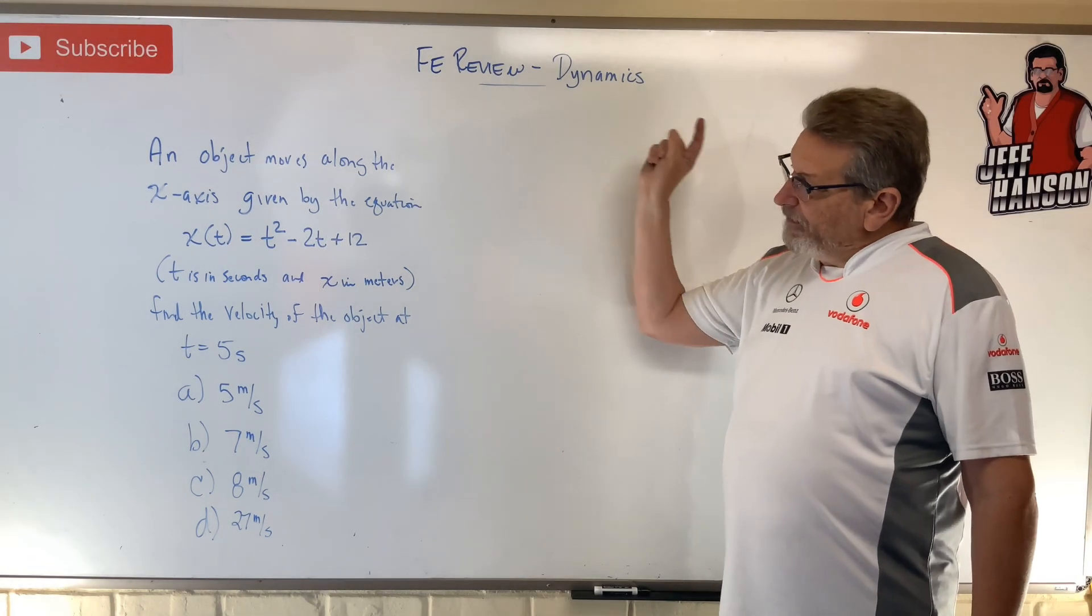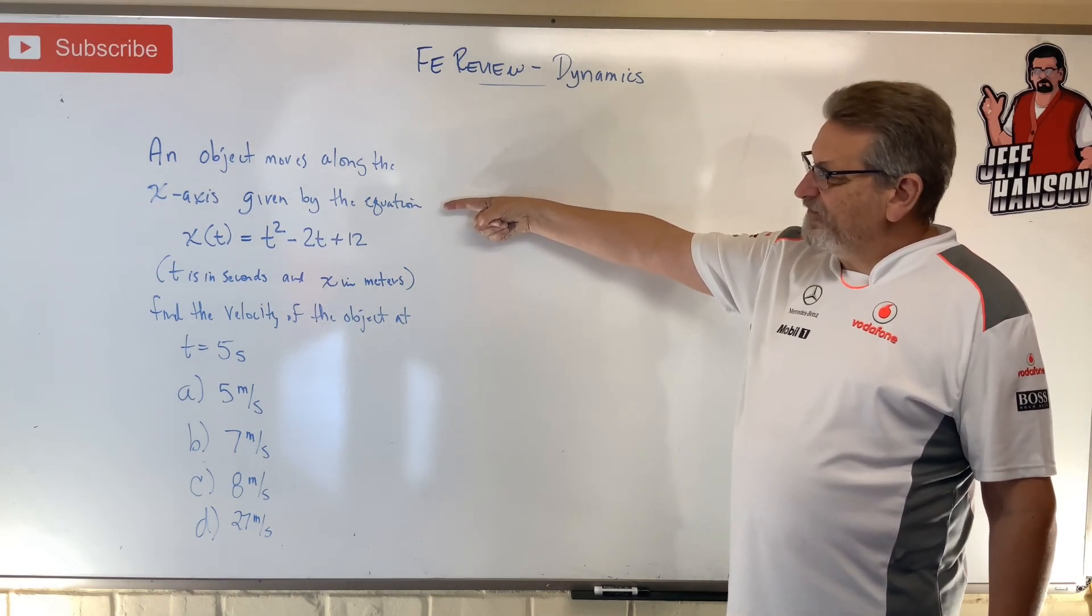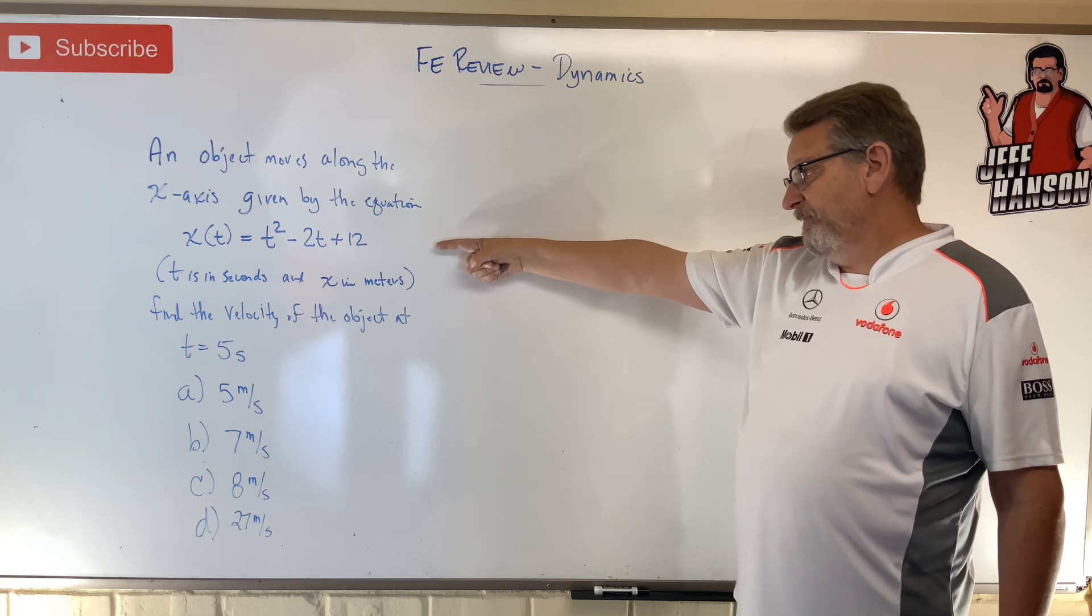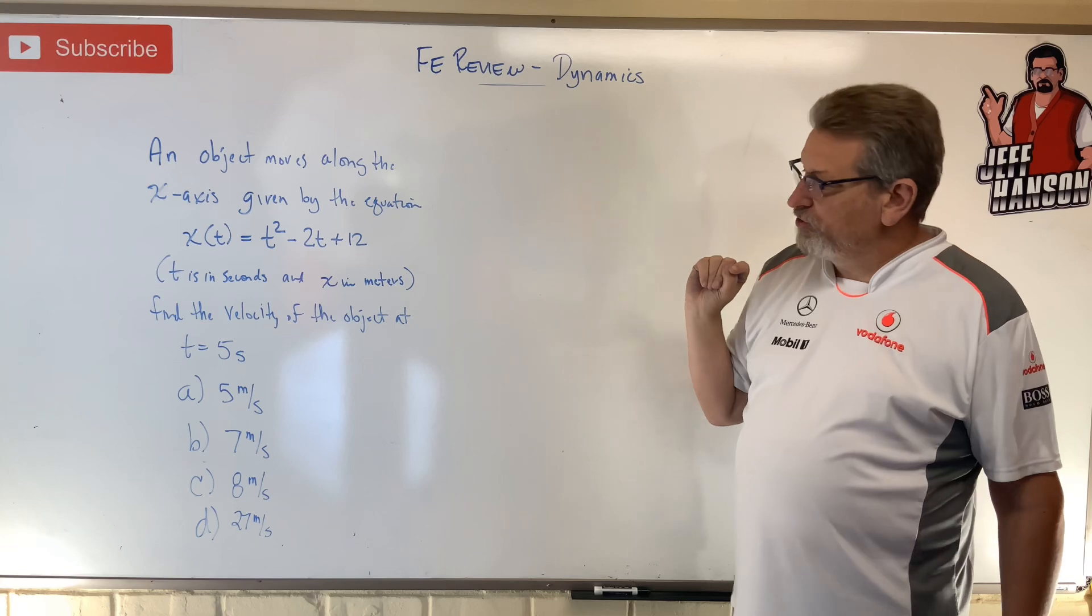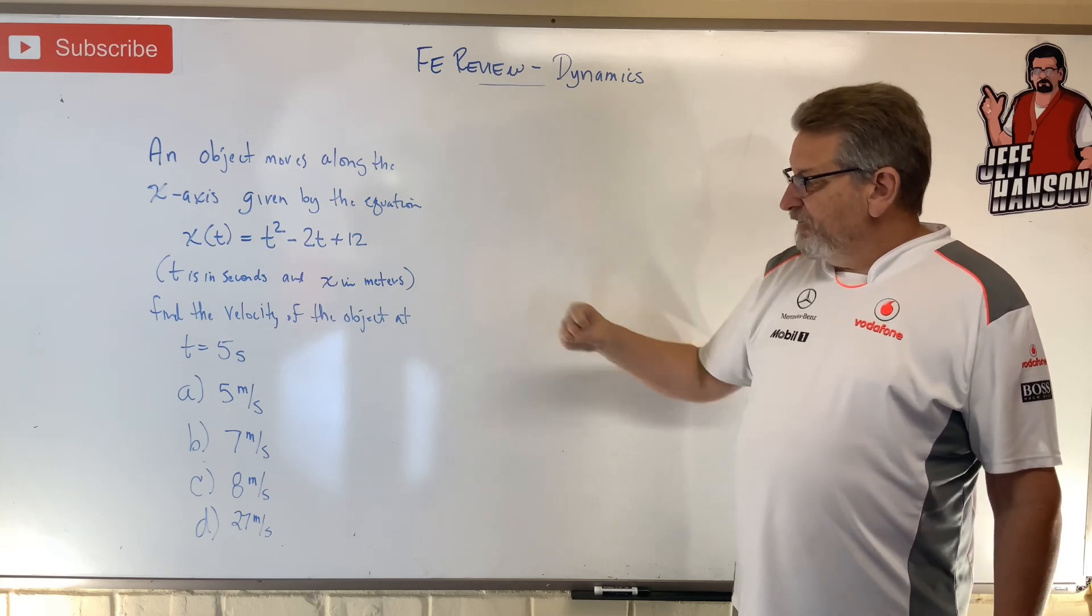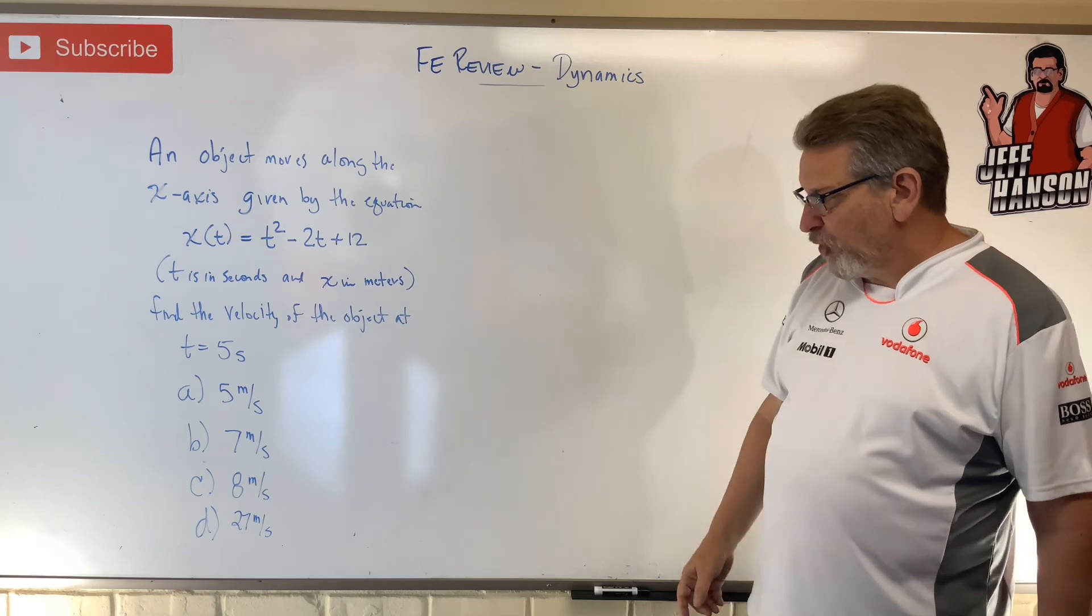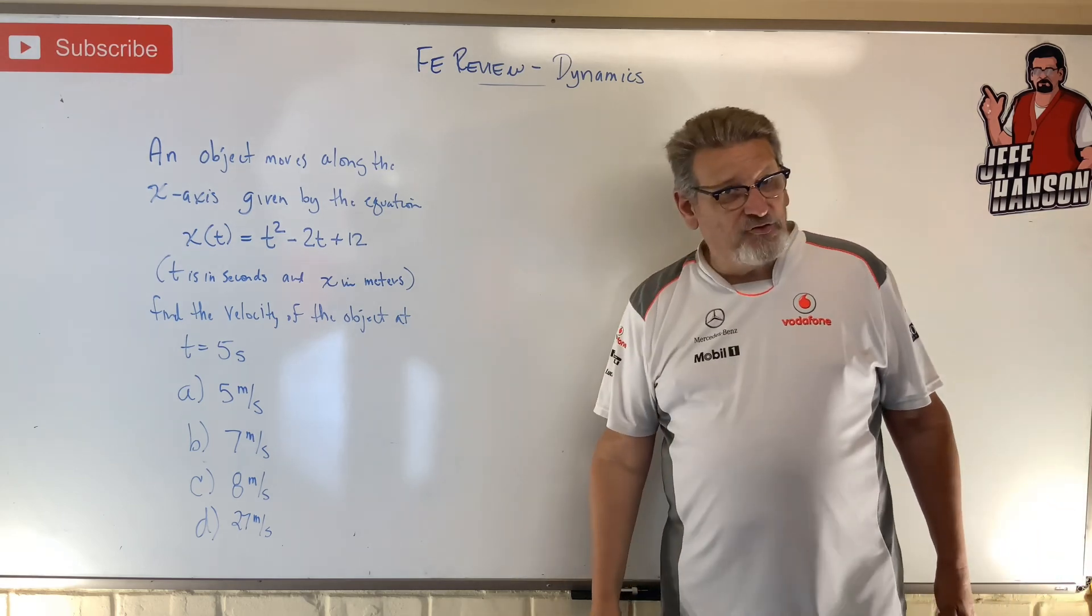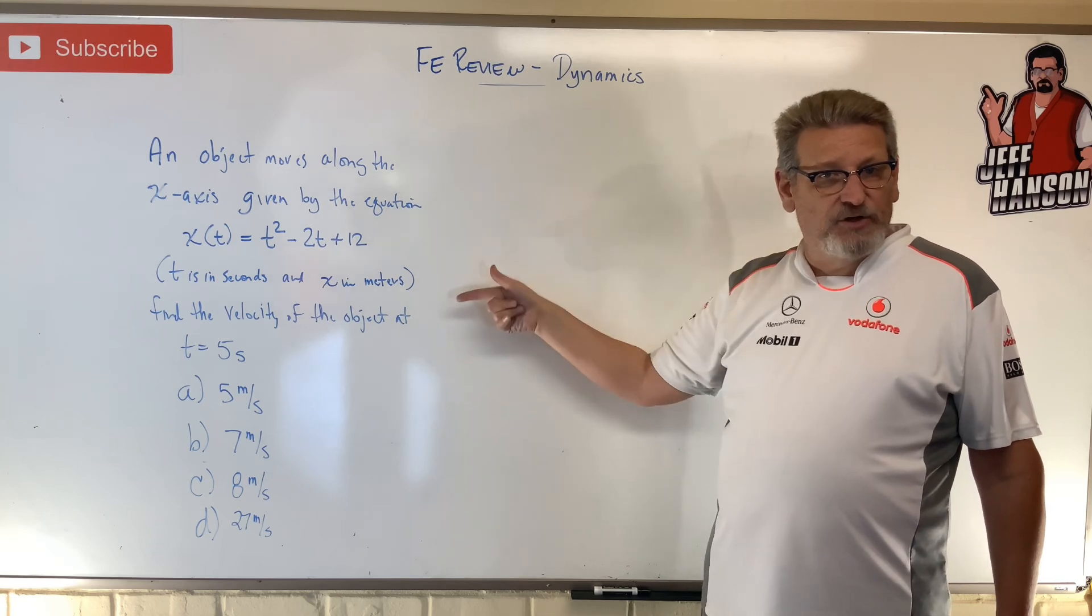Hey gang, FE review problem dynamics. An object moves along the x-axis given by the equation, where t is in seconds and x is in meters. Find the velocity of the object at five seconds. There are your answer choices. Okay, press pause, work it out. When you come back, I'm going to show you how to do it. Ready, set, go.